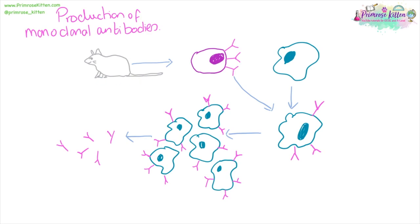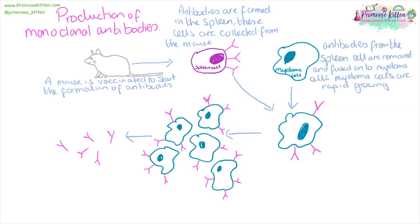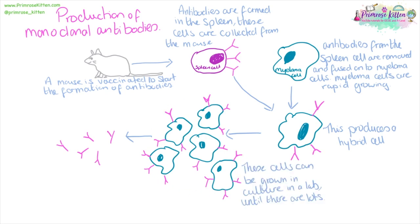Here we have our lovely little mouse who's going to be vaccinated, and this is what's going to start the formation of antibodies. After a while, cells from the spleen of the mouse where the antibodies have formed are collected. We can take a known cancerous cell line — myeloma cells — and fuse them together. After the antibodies and the cancer cell line have been fused together, we end up with a hybrid cell. These hybrid cells can be grown in culture in a laboratory until we have lots of them. After they've grown up, the cells can be separated and the antibodies can then be used for various things like pregnancy tests or cancer detection.